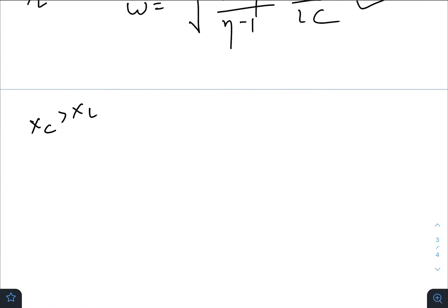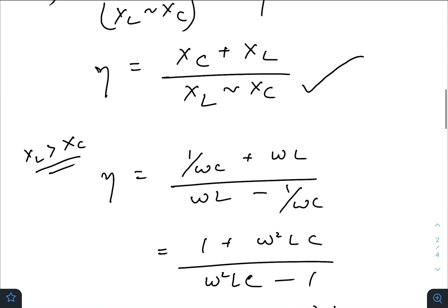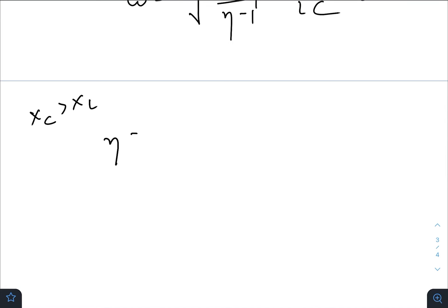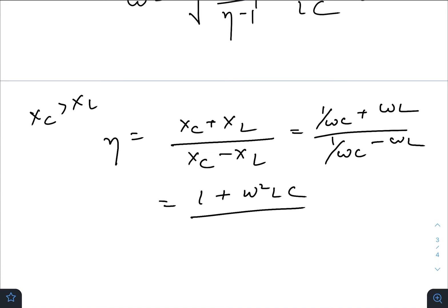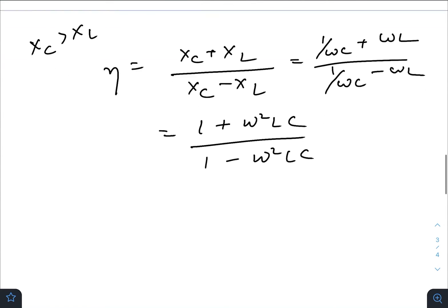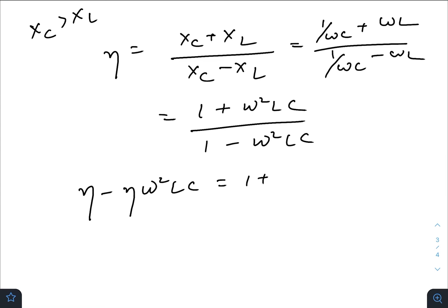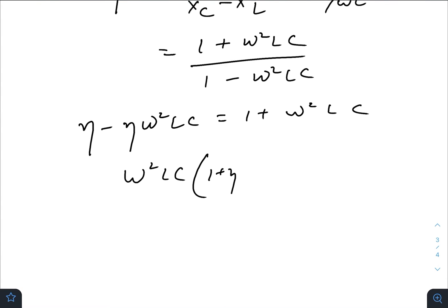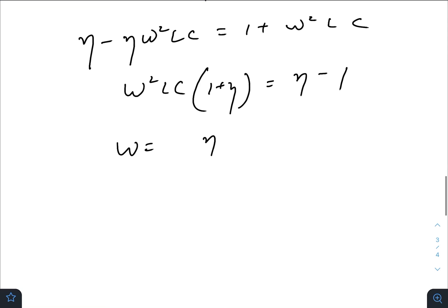The other frequency we will get when XC is greater than XL. So η equals (XC + XL)/(XC - XL), which equals (1 + ω²LC)/(1 - ω²LC). So η - η(ω²LC) equals 1 + ω²LC. Taking ω²LC common: 1 + η equals η - 1. So ω equals √[(η-1)/(1+η)] · 1/√(LC).